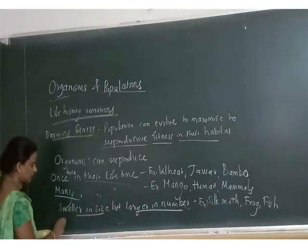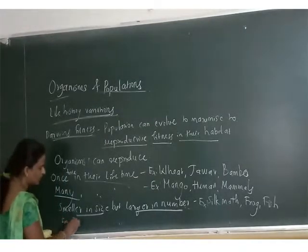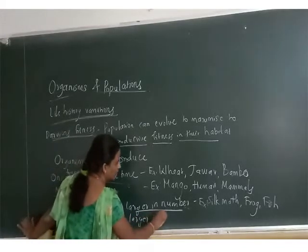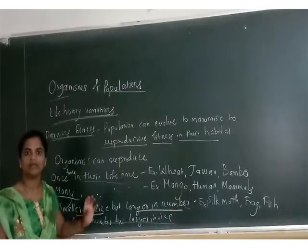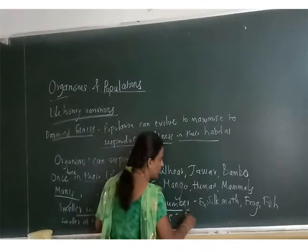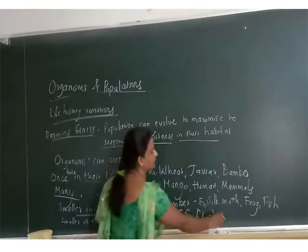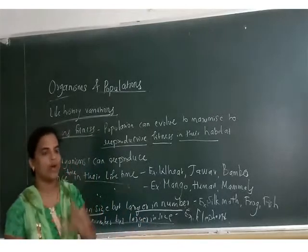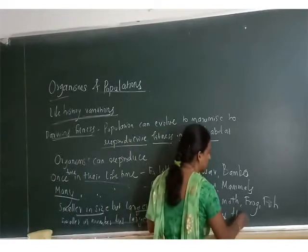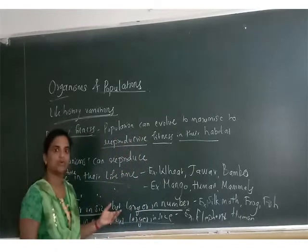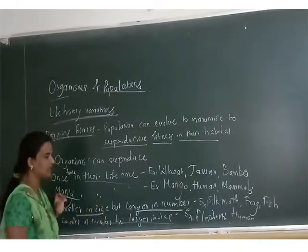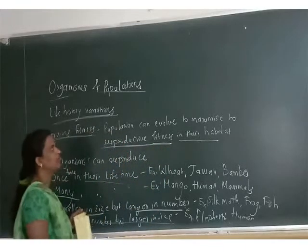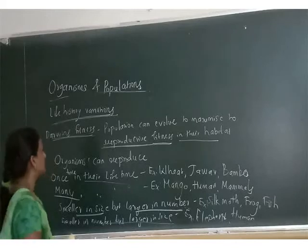Exactly opposite to this, some organisms produce offspring that are smaller in number but larger in size. For example, elephants reproduce many times but give only one offspring at a time, and that offspring is of large size. Similarly, human beings give one or two at a time, with large size but small number. In this way, reproductive variations take place - this is called reproductive fitness, and it comes under life history variations.